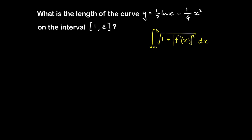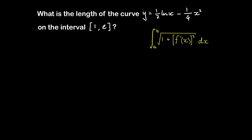The first step is to differentiate our function. So if this is f(x), then dy/dx is going to be 1 over 2x minus 1 over 2, or minus x over 2.